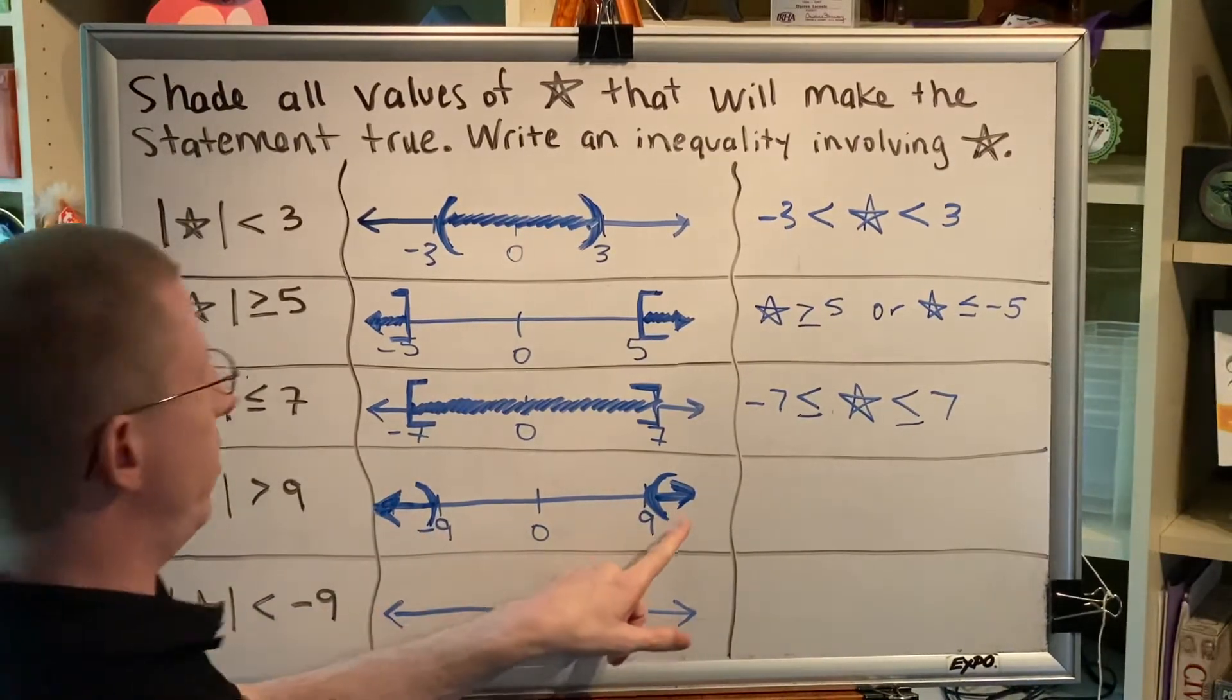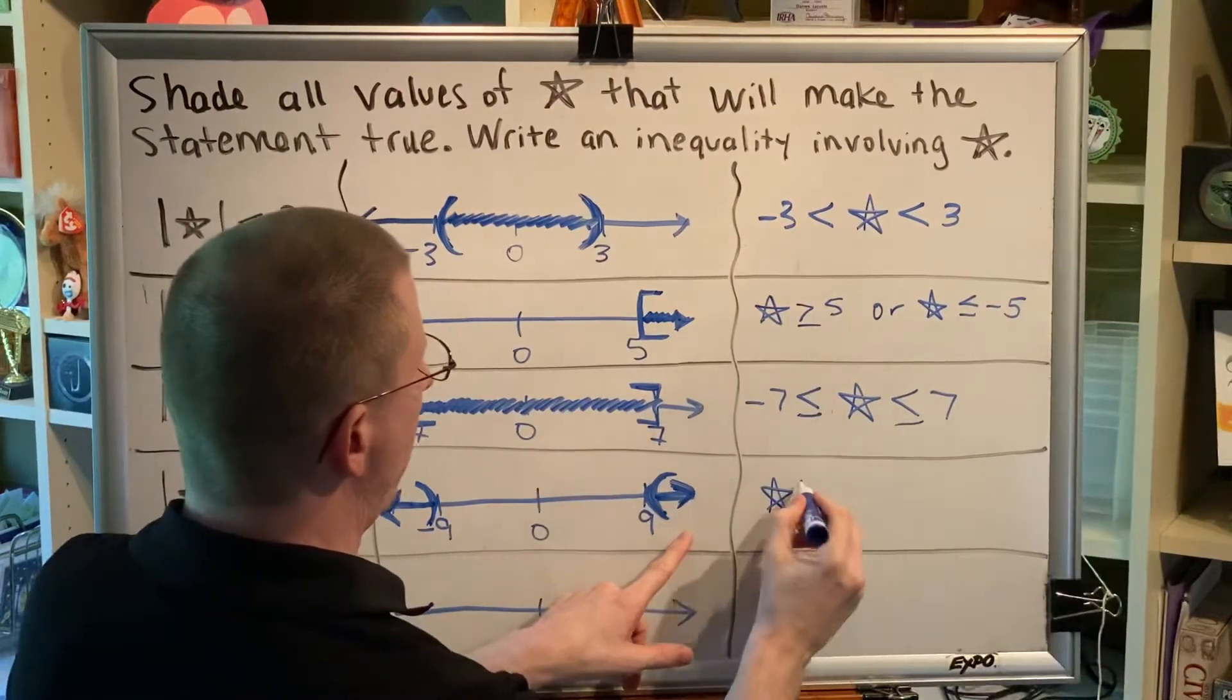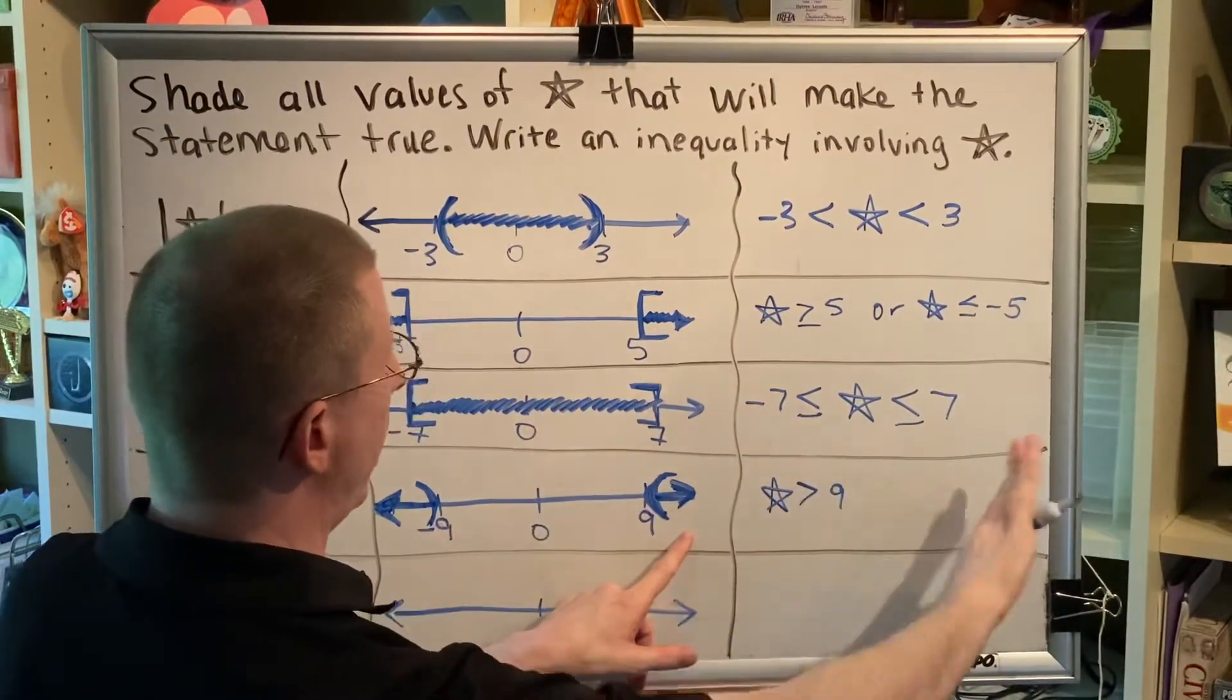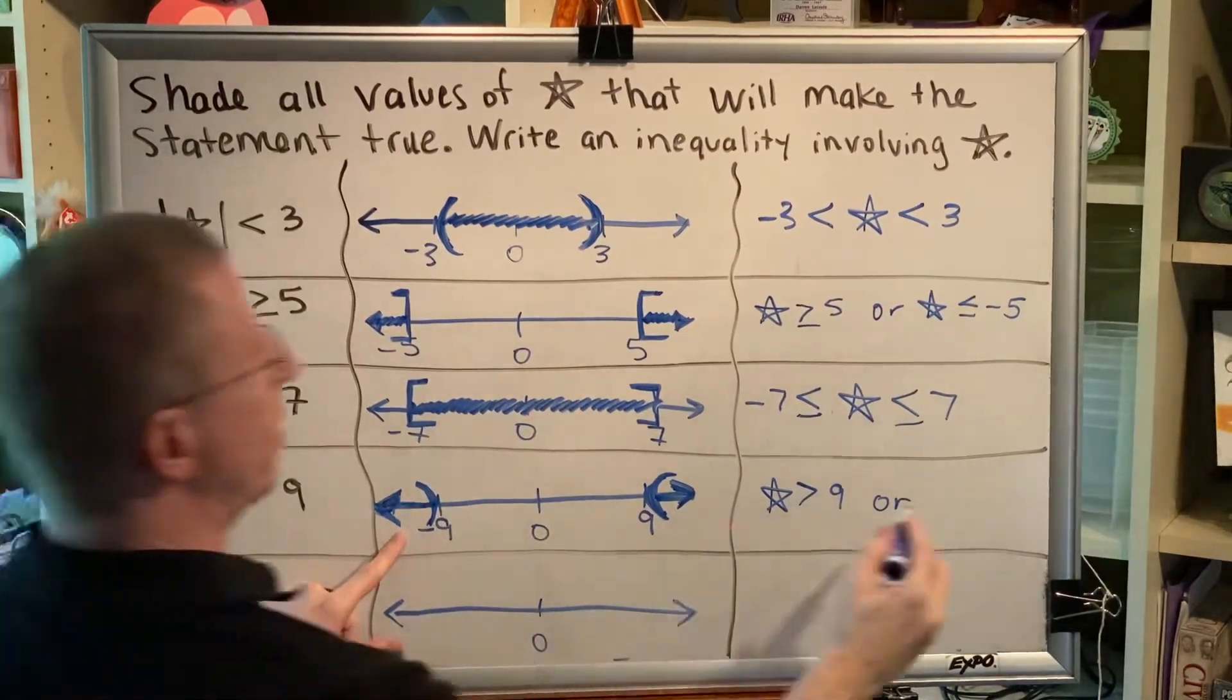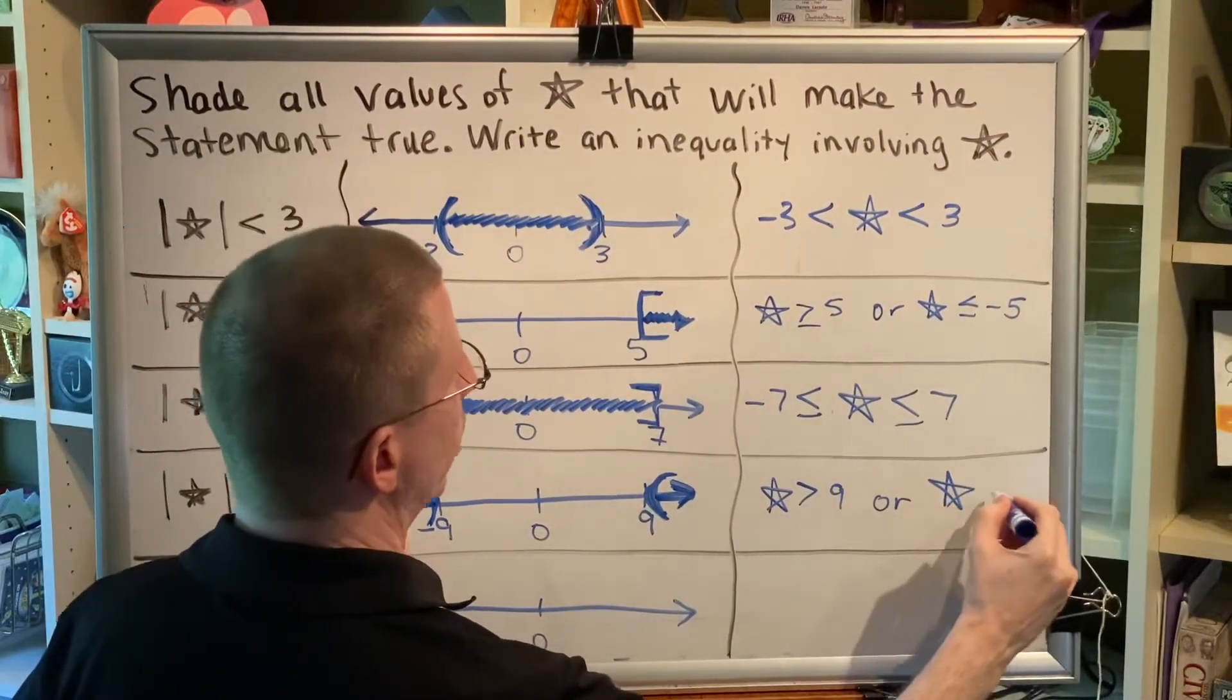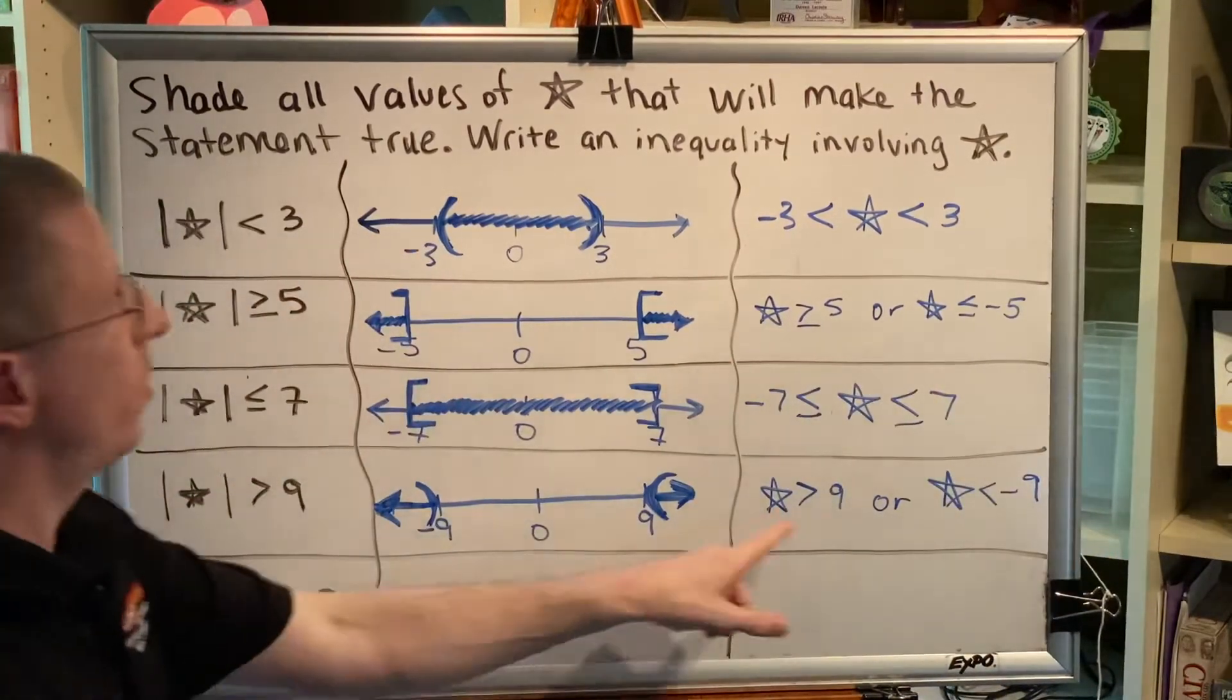So this part of the inequality, star, is greater than 9 because we are to the right of 9. This part less than negative 9 because we are to the left of negative 9. So these are our two inequalities.